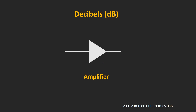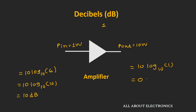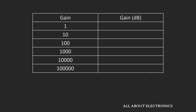Let's talk about power gain and see how it can be represented in decibel form. Say we have an amplifier providing a power gain of 10 — applying 1 watt at input gives 10 watts at output. In decibels, it is represented as 10 log(G), where G is the gain, so 10 log(10) equals 10 dB. When the gain is 1, the output equals the input, and the gain in decibel is 10 log(1), which equals 0 dB.